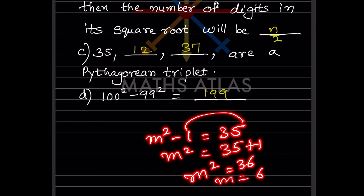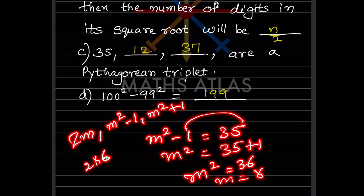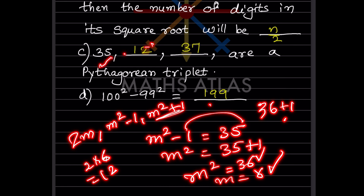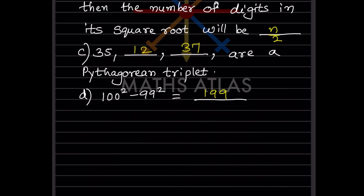With m = 6, we calculate 2m = 12 and m²+1 = 36+1 = 37. So the Pythagorean triplet is 35, 12, and 37, where 35 is m²−1, 12 is 2m, and 37 is m²+1.